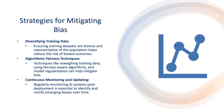Let's take a look at some of the strategies for mitigating bias. The first is diversifying training data — ensuring training data sets are diverse and representative of the population helps reduce the risk of biased outcomes. The next is algorithmic fairness techniques. Techniques like reweighing training data, using fairness-aware algorithms, and model regularization can help mitigate bias. And finally, continuous monitoring and updating — regularly monitoring AI systems post-deployment is essential to identify and rectify emerging biases over time.